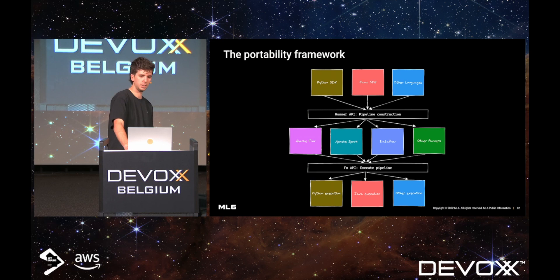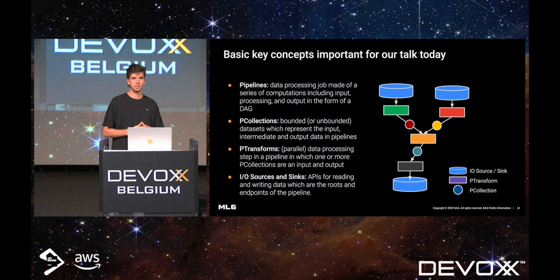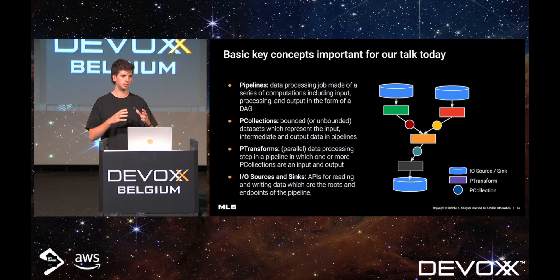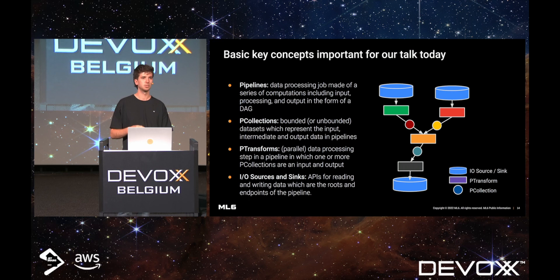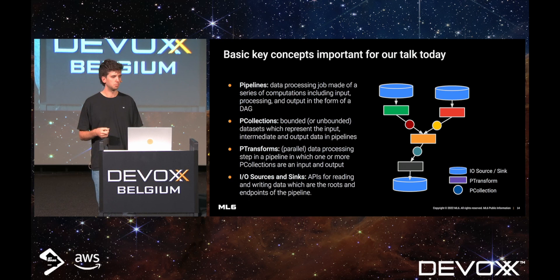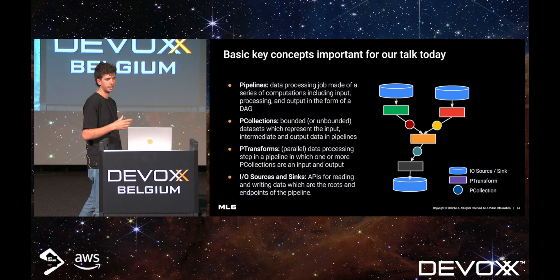Let's have a look at what a basic pipeline in Beam looks like. There are four really basic concepts. The first is the pipeline itself — that's just a data processing job which contains data input, some transformations, and then a data output, defined as a DAG. You first define your pipeline and then later execute it. Between every transformation, data flows and is always represented as a PCollection, which is either a bounded or unbounded data set. Your transformations themselves are PTransforms — parallel data processing steps in the pipeline which can take in one or multiple PCollections and output another. And then finally, your IO sources and sinks are APIs to read and write from and to databases.